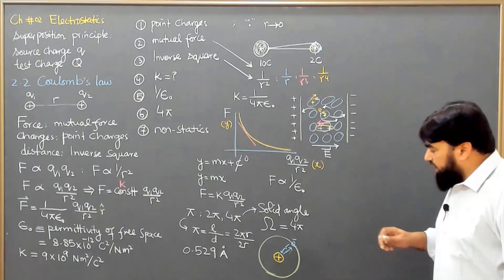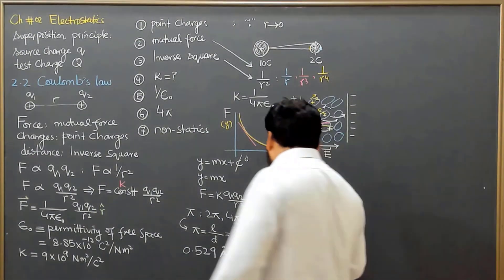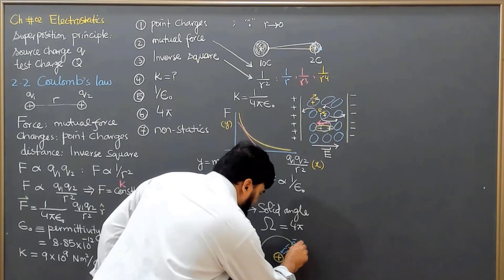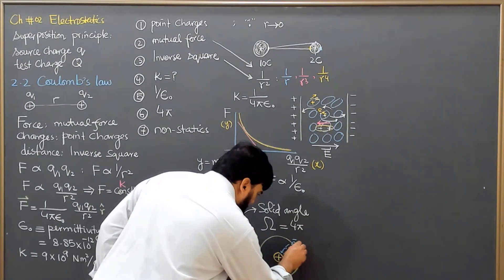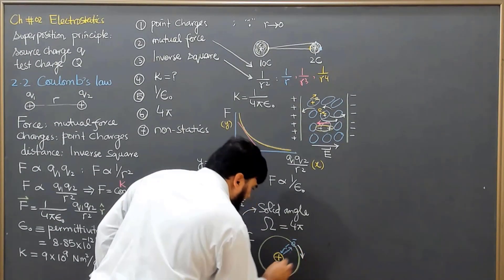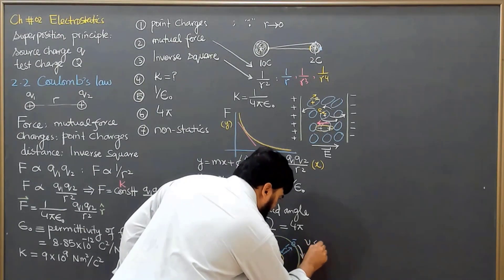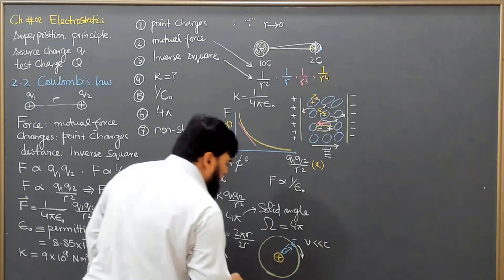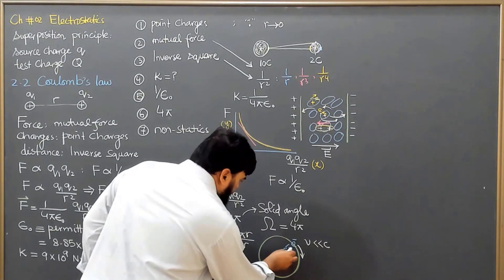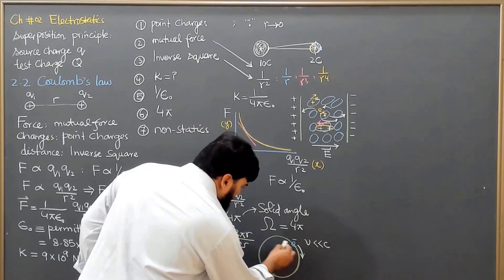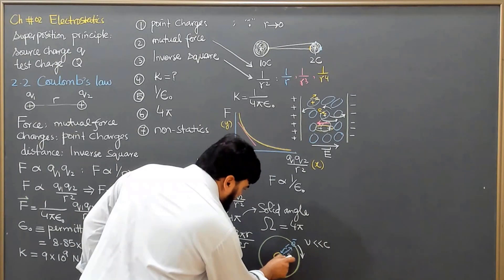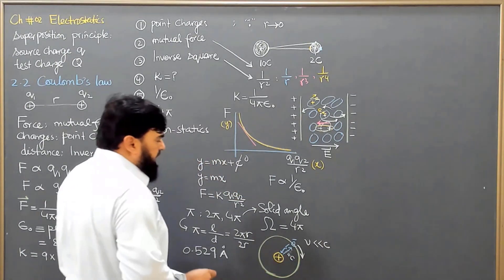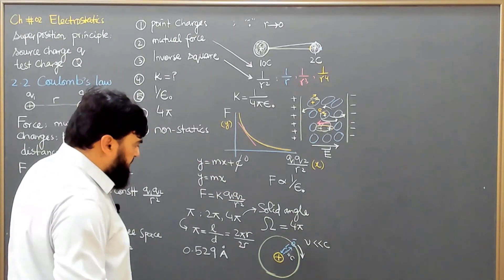Now we know that the speed of electron in this orbit is very, very less than C, while these photons, these mediating particles, are being exchanged at equal to C, at speed of light.